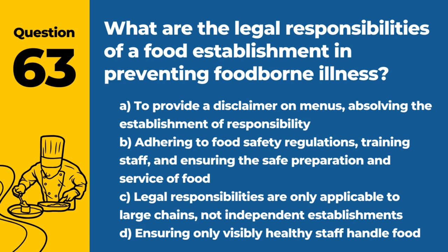Question 63. What are the legal responsibilities of a food establishment in preventing foodborne illness? The answer is B: Adhering to food safety regulations, training staff, and ensuring the safe preparation and service of food. Legal responsibilities aim to protect public health.